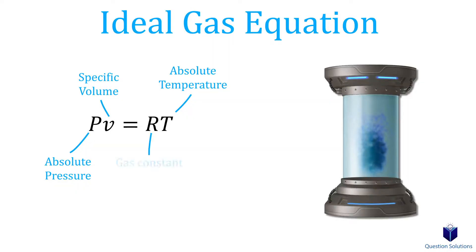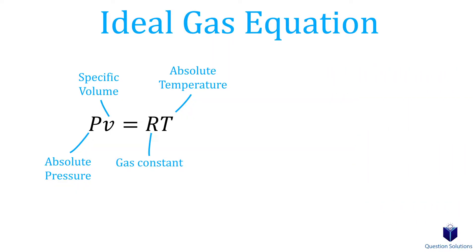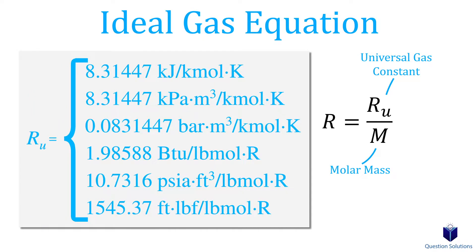The letter R is called the gas constant. It's different for each gas, and can be found by dividing the universal gas constant by the molar mass of the gas.